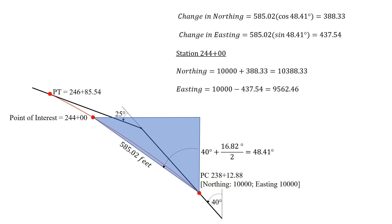So at our station 244, the northing is going to be 10,000 plus our distance in the northing direction, 388.33, gives us a coordinate of 10,388.33. And for our easting, it's 10,000 minus, because we're going west, 437.54 gives us an easting coordinate of 9,562.46.